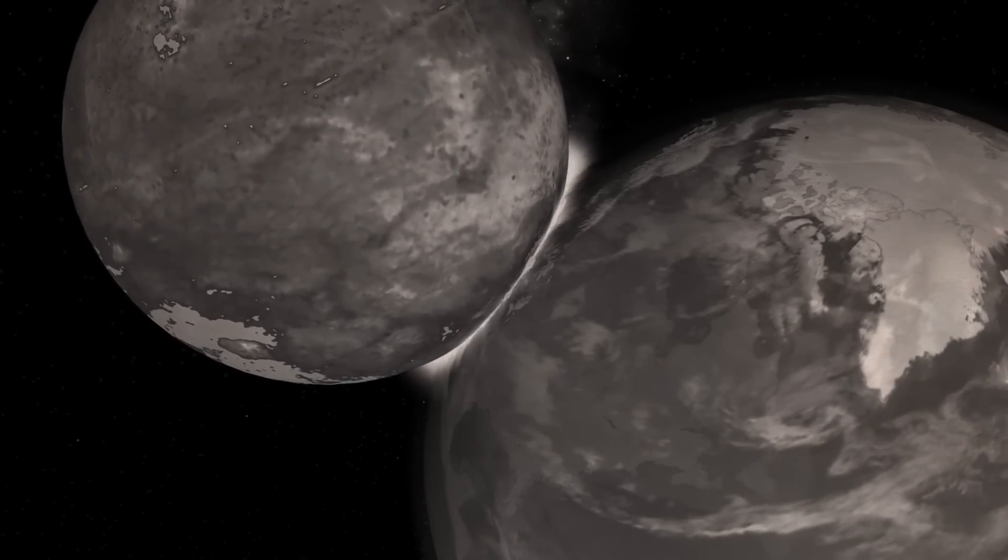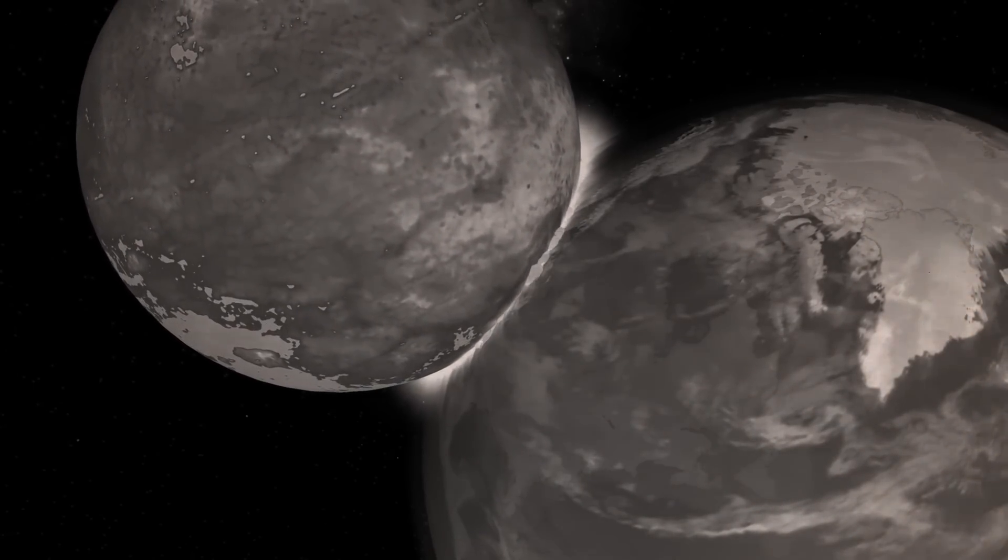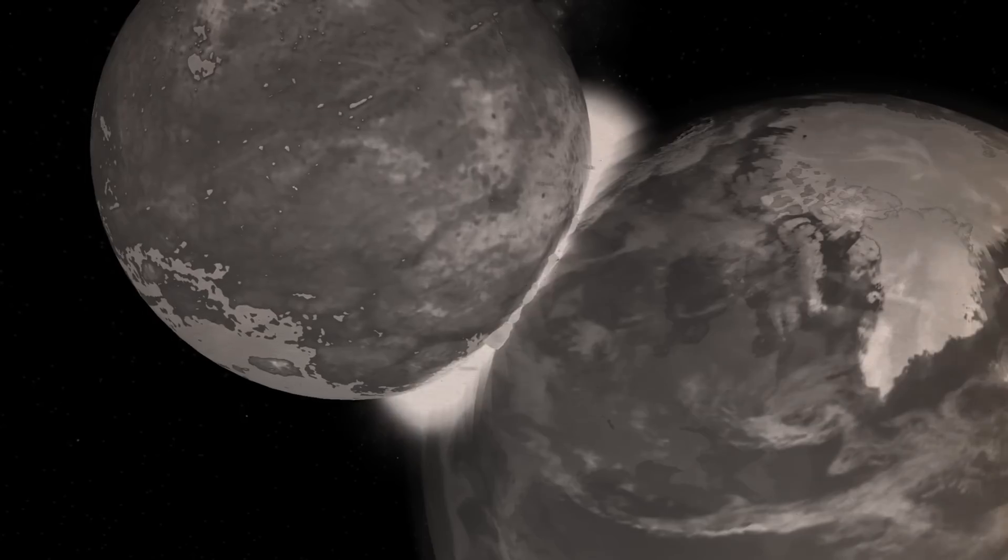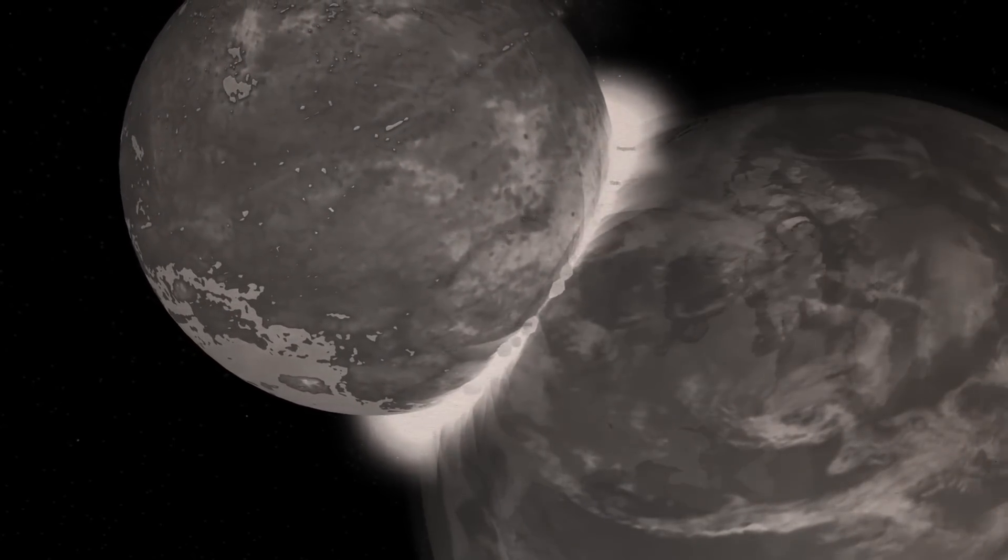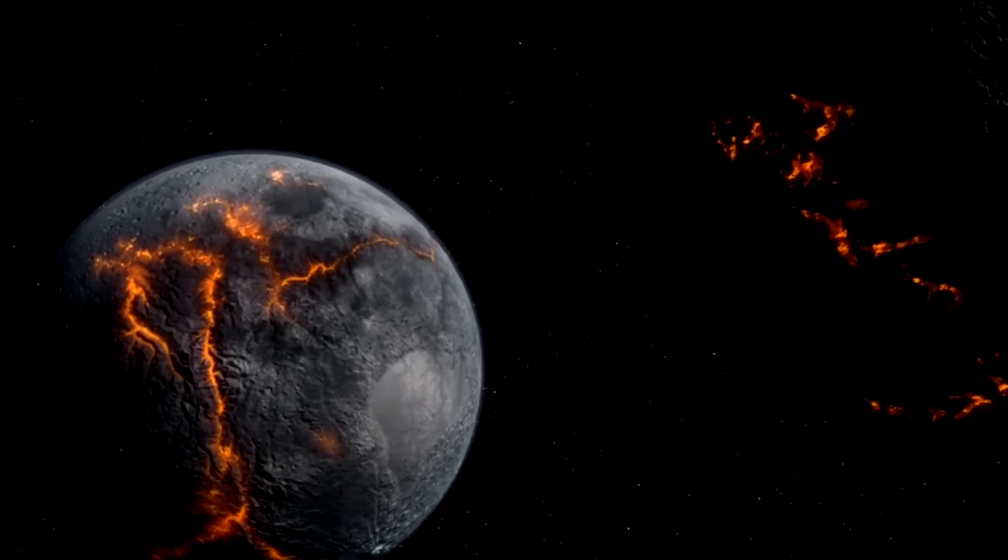However, there are issues with this theory, such as the fact that Earth and the moon have similar chemical signatures, suggesting that they were made of the same substance. Instead, they've come up with a different idea.